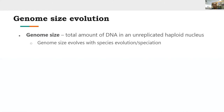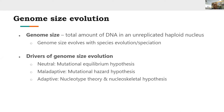Genome size is the total amount of DNA in an unreplicated haploid nucleus, and several studies have shown that as new species evolve, the genome also evolves. As a result, many experts have recommended genome size as a reliable taxonomic marker that could be used for phylogenetic studies and for taxonomic delineations of taxa. There are different explanations offered as to why there are differences in genome size across several taxa.